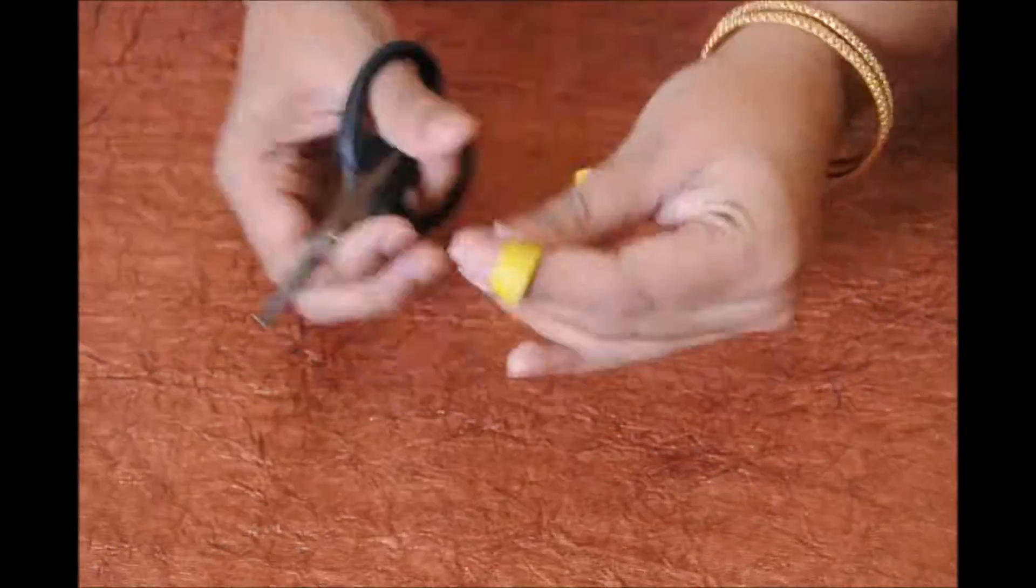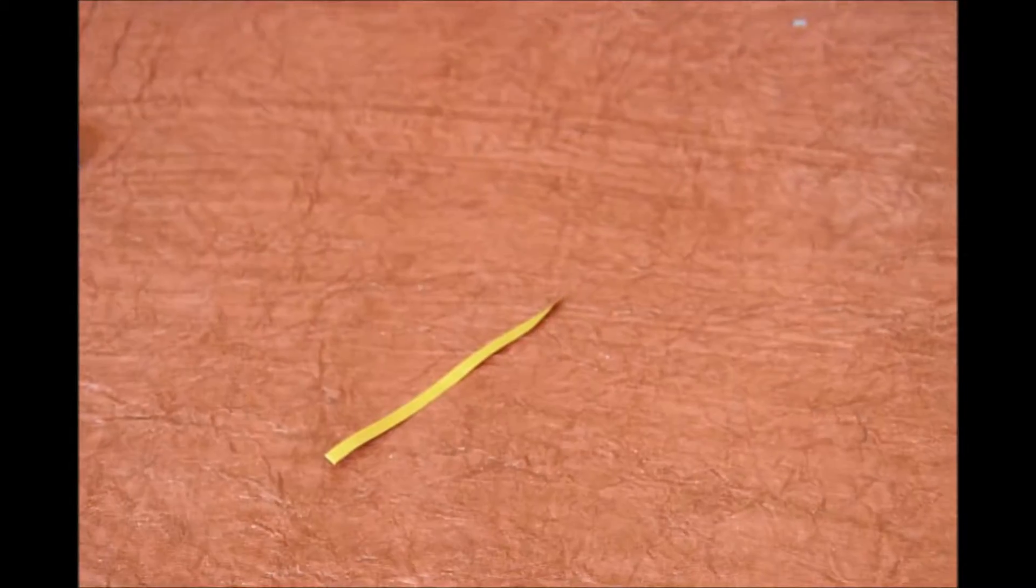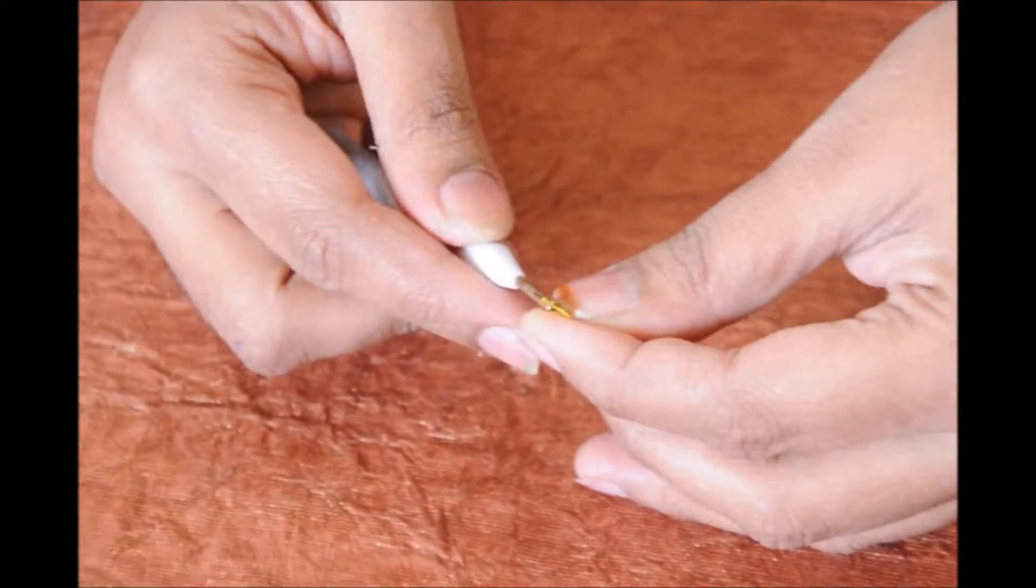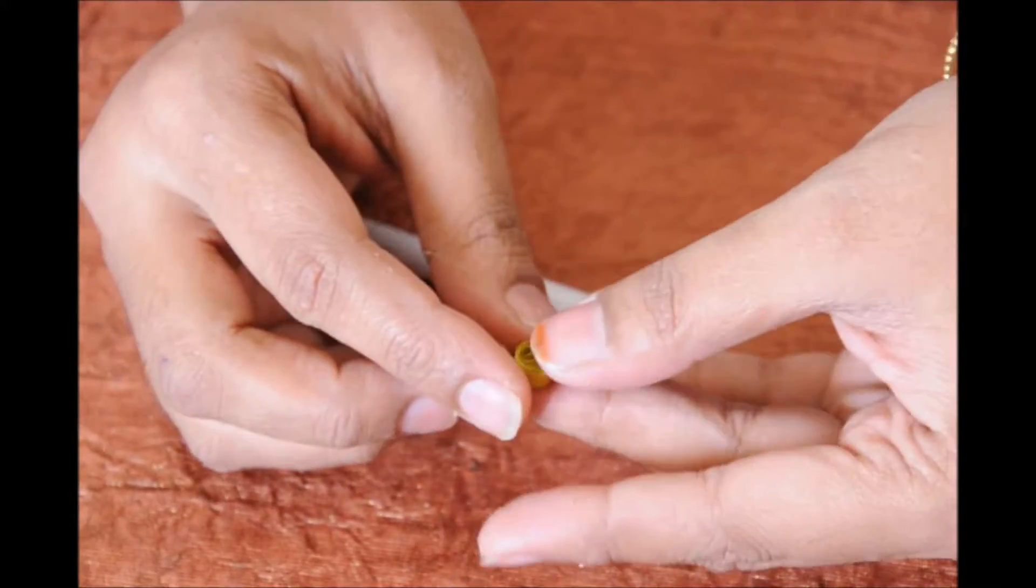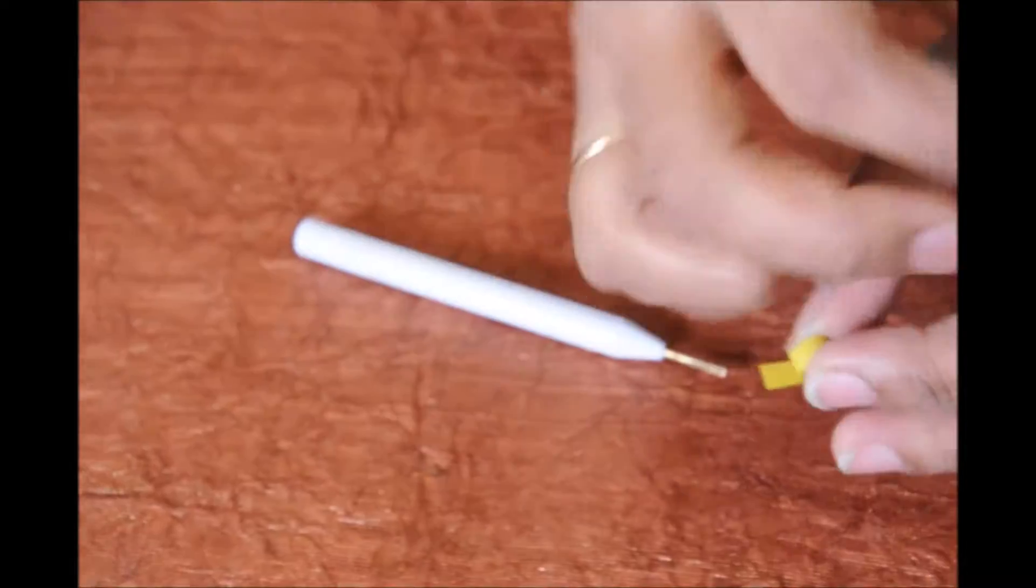Now take the yellow color quilling strip, greenish yellow color quilling strip and cut it into one fourth piece. Start rolling it till the end. Loosen it and then glue it at the end.